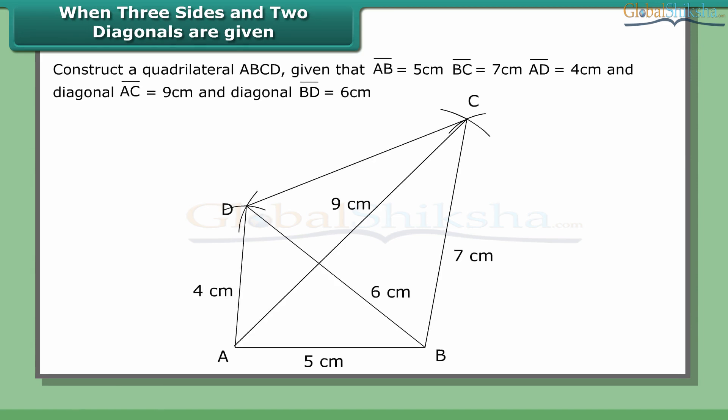When three sides and two diagonals are given, construct quadrilateral ABCD given that AB = 5 cm, BC = 7 cm, AD = 4 cm, diagonal AC = 9 cm, and diagonal BD = 6 cm.